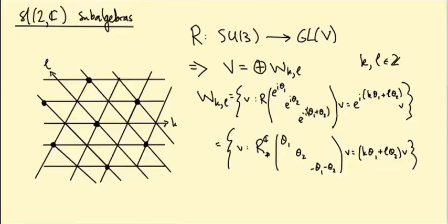K and L here are integers, and the way I was drawing the weight diagram was to plot K and L that appear in the decomposition as blobs at the integer points of a lattice. The lattice I was using was not the standard integer lattice where the axes are 90 degrees to one another — instead I was using one where the axes are 120 degrees to each other, to make the pictures more symmetrical.